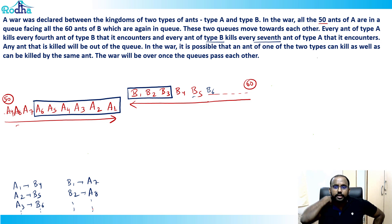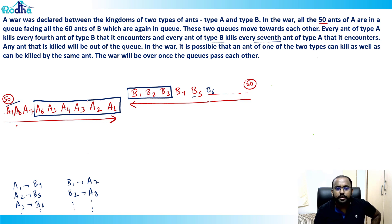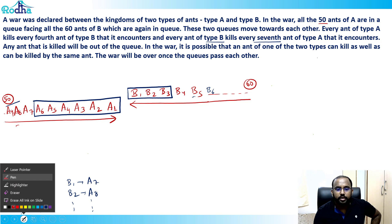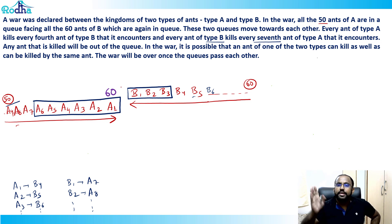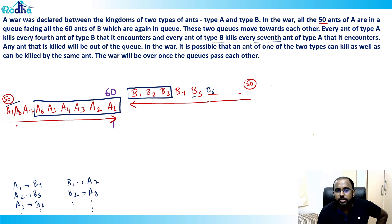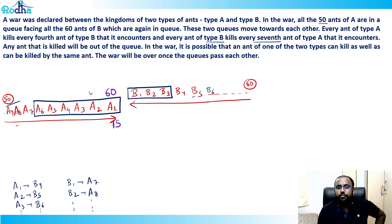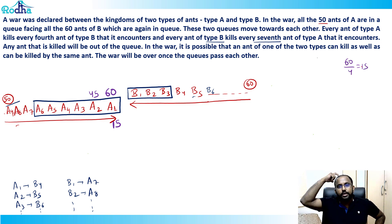Now let's build a table. For a1, there are 60 ants of type B. Every fourth ant is killed: 60 ÷ 4 = 15, so a1 kills 15 ants. That leaves 45 ants of type B for a2.